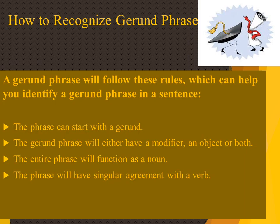How to recognize a gerund phrase. The phrase can start with a gerund when it is acting as a subject. The gerund phrase will either have a modifier, an object or both — in that case it will be acting as object. The entire phrase will function as a noun, and the phrase will have singular agreement with a verb.